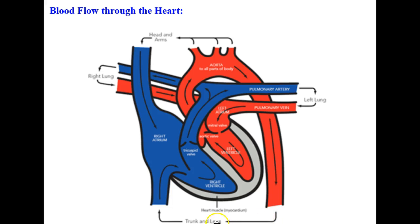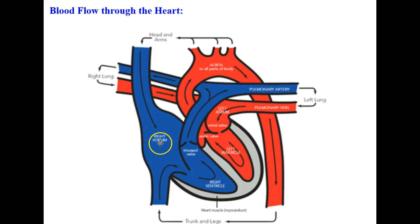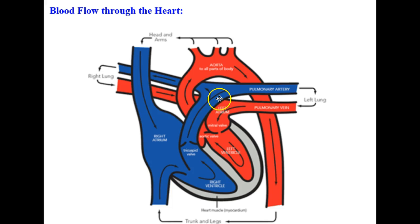From the trunk and legs, the blood has had its oxygen removed and is now deoxygenated, returning to the right atrium through the inferior vena cava. From the head and arms, the deoxygenated blood returns to the right atrium through the superior vena cava. From the right atrium, the deoxygenated blood re-enters the right ventricle, and when the heart contracts it is pushed through the tricuspid valve into the pulmonary arteries and to the lungs, and the process starts all over again.